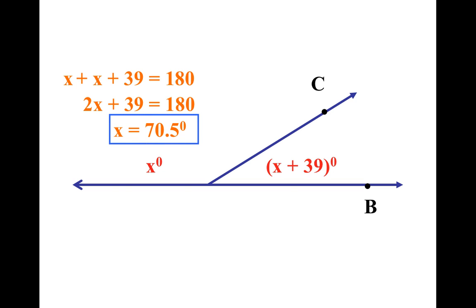All right, when I went minus 39 and minus 39, I got 2X equaled 141. I divided by 2 and I got X equals 70.5 or 70.5. Then that would be it.